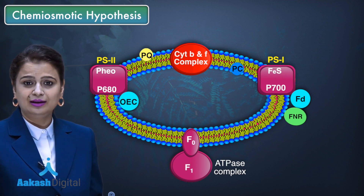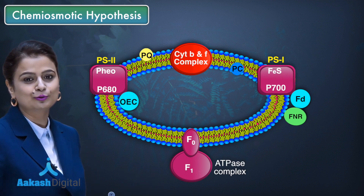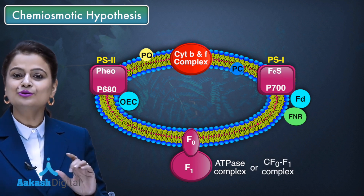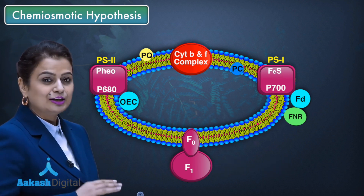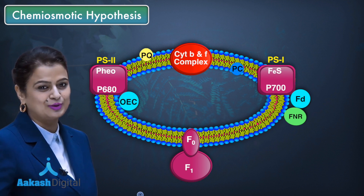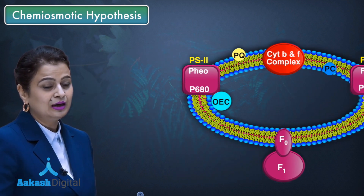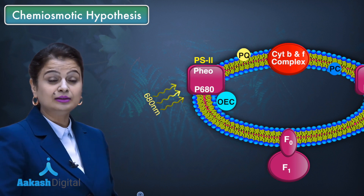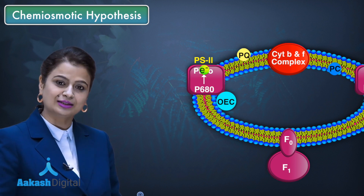This F0F1 complex is also present in mitochondria. To differentiate it from the mitochondrial complex, in the chloroplast it is called the CF0F1 complex, where C represents chloroplast origin. Now the story begins with P680 — when a photon of light is absorbed by P680, there is extrusion of an electron, and that electron is accepted by pheophytin.